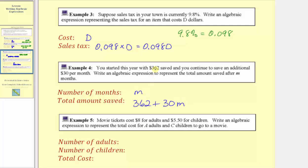The total savings equals the starting savings of three hundred sixty-two dollars, plus the amount saved over m months. As an example, if you save thirty dollars for ten months, m would be equal to ten, and the total savings would be three hundred sixty-two plus thirty times ten, which equals three hundred sixty-two plus three hundred, which equals six hundred sixty-two. So after ten months you would have saved six hundred sixty-two dollars.